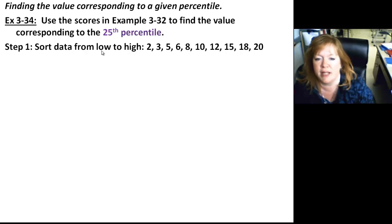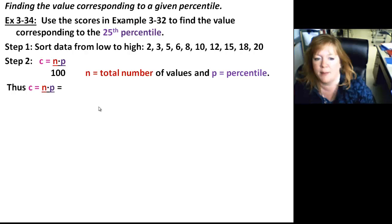Finding the value corresponding to a given percentile. Use the scores that we just used and find the value corresponding to the 25th percentile. So let's rock and roll on this. First thing to do, sort the data from low to high. Second step, you're going to find your locator, your C. It's going to be in this formula: N times P over 100. N is the total number of values and P is your percentile. 25 is going to go in for the P, 10 is going to go in for the N. 10 times 25 over 100 gives me 2 and a half.